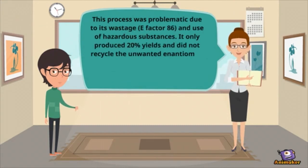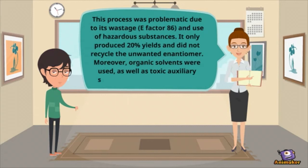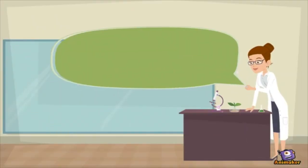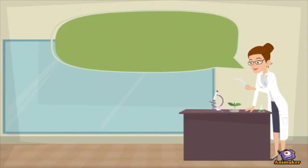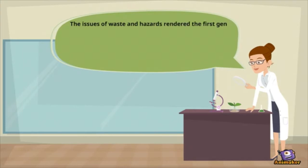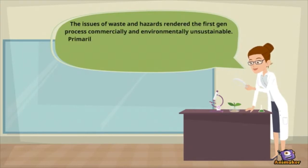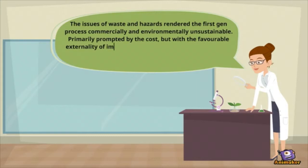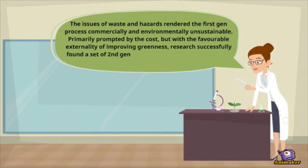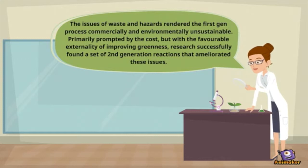What are some problems with this synthesis? This process was problematic due to its wastage and use of hazardous substances. It only produced 20% yields and did not recycle the unwanted enantiomer. Moreover, organic solvents were used as well as toxic auxiliary substances like mandelic acid. The issues of waste and hazards rendered the first-generation process commercially and environmentally unsuitable.